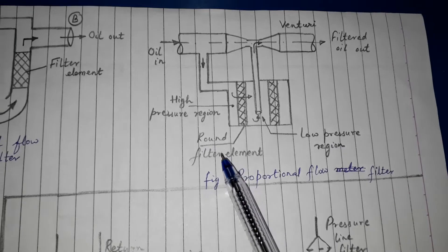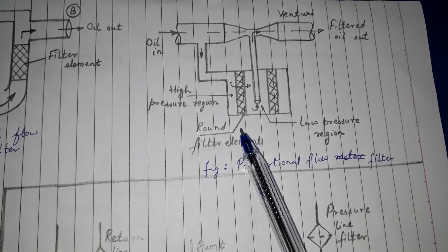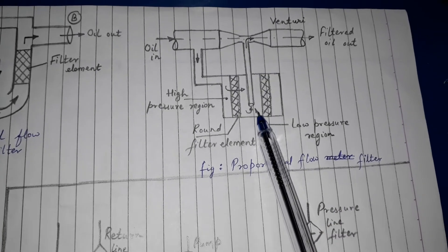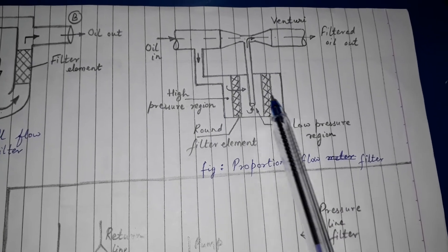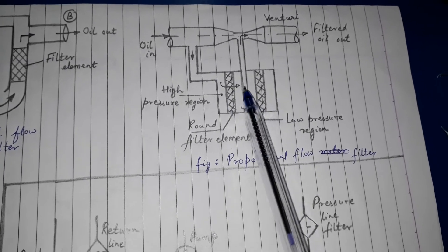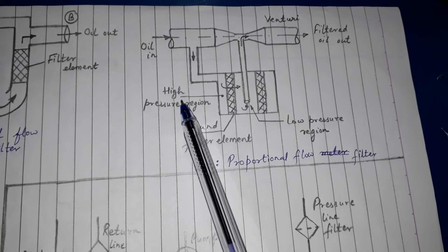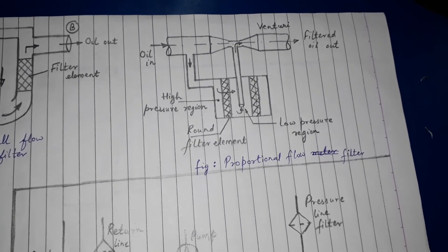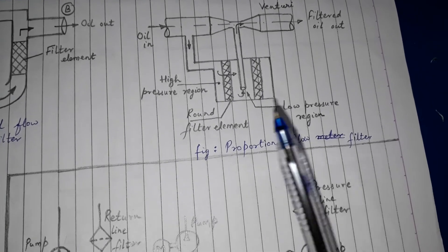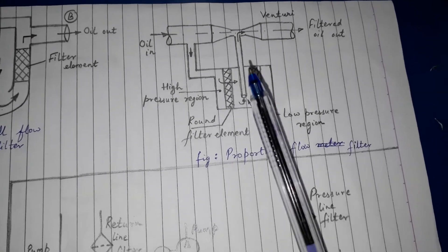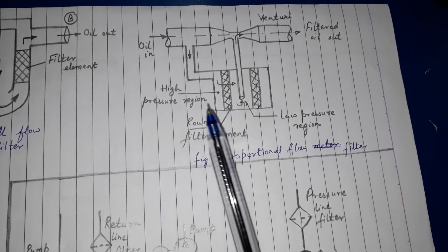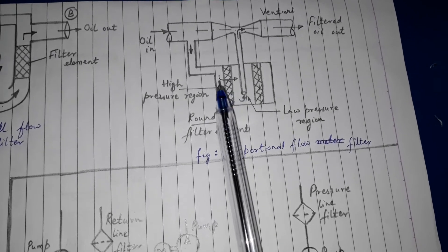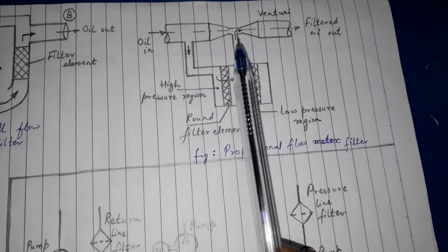Proportional flow filter में एक venturi use होता है जिसकी वजह से low pressure और high pressure region create होता है। Round filter के अंदर low pressure region होता है और बाहर high pressure region। इससे pressure में difference हो जाता है, जिसकी वजह से proportional quantity of oil filter element के through जाता है — full flow नहीं, proportional flow।